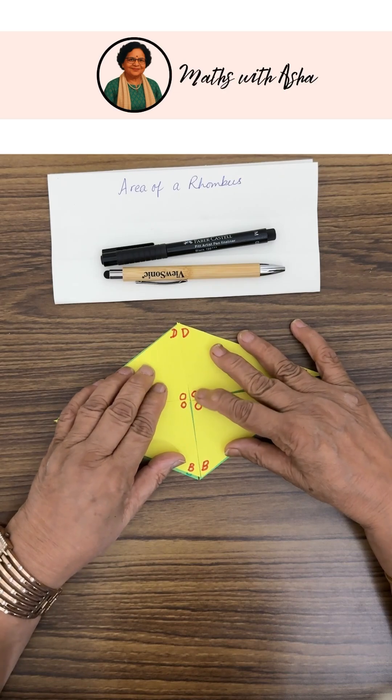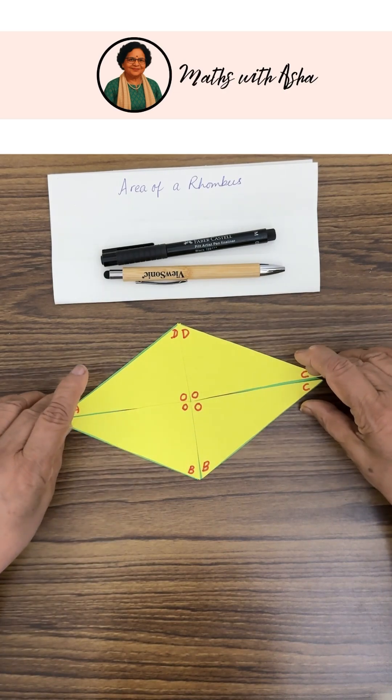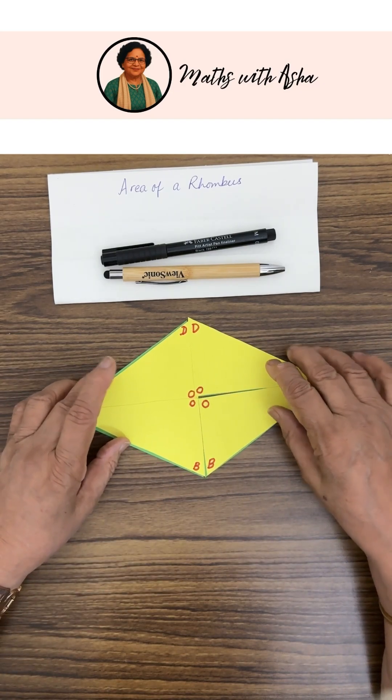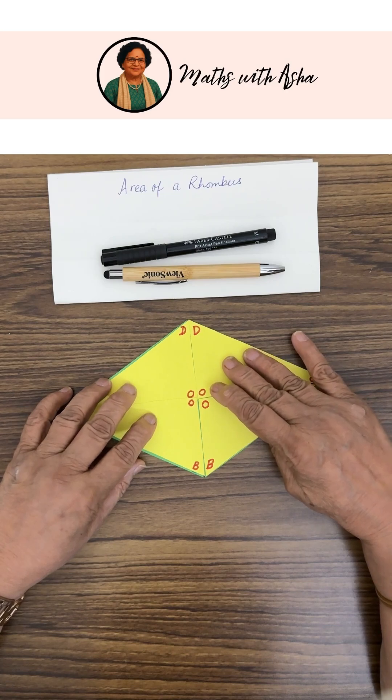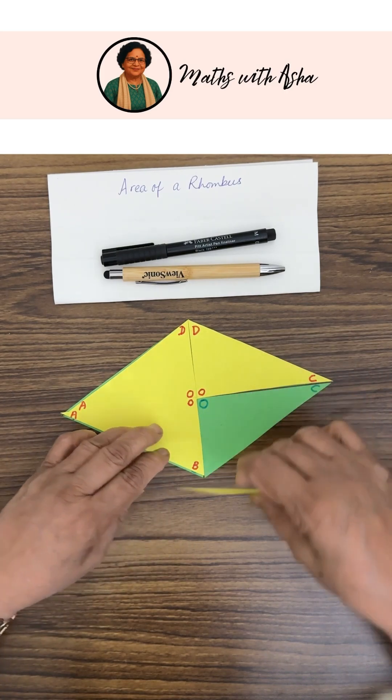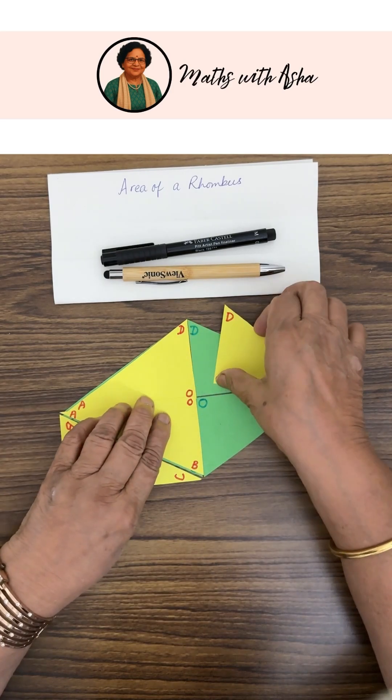After cutting, this is how we have. Now what we are going to do is we are going to arrange these four triangles in such a way that we get a simpler figure whose area we can find immediately. So if I just move this here and this triangle here.